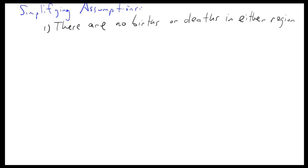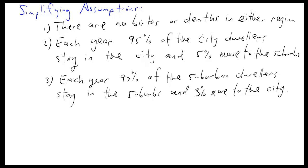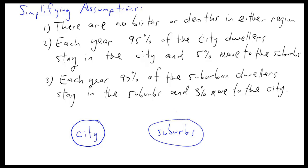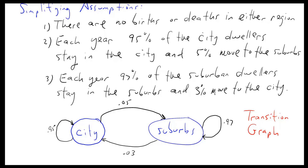Here are our simplifying assumptions: there are no births or deaths in either region. Each year, 95% of city dwellers stay in the city and 5% move to the suburbs. Each year, 97% of suburban dwellers stay in the suburbs and 3% move to the city. Implied in these assumptions is that no one moves into or out of the county. This is called a transition graph.